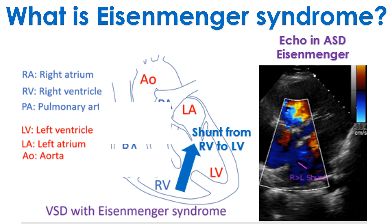Eisenmenger syndrome is a late complication of congenital heart diseases with large left-to-right shunts. Fortunately, it is rare nowadays because most conditions which can cause Eisenmenger syndrome are detected by neonatal screening and treated early, so that this complication does not develop later.